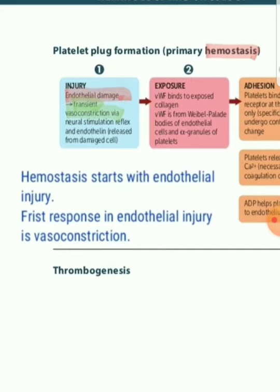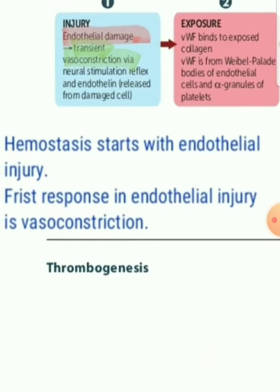We'll start with platelet plug formation — the primary hemostasis. The first step is endothelial damage. We know Virchow's triad has three corners: endothelial injury, stasis, and turbulence. Endothelial injury is always the primary trigger for most plug formations. For example, in vasculitis there is inflammation, and in DIC there is damage to endothelium. So endothelial activation takes place — that is a pro-coagulant change.